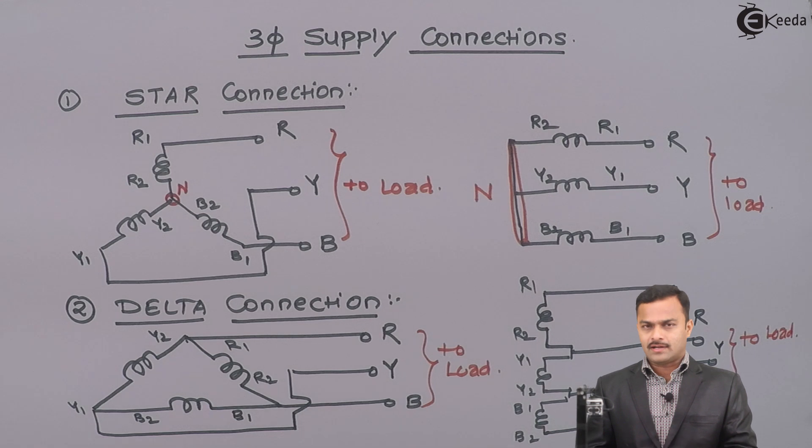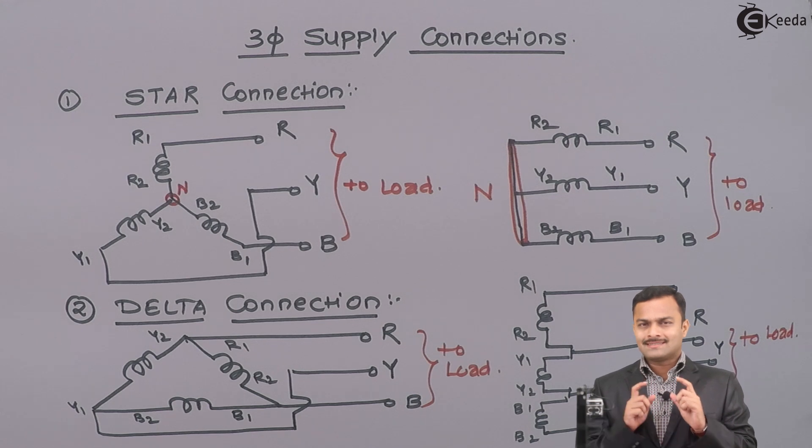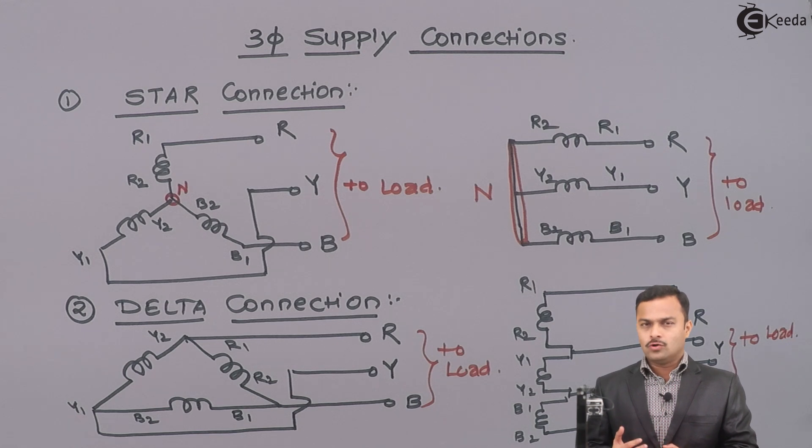Remaining part is slightly different which we cannot compare with the DC circuit. Because there we have seen only resistances are connected in star and delta. But here, supplies and loads are connected in star and delta. Thank you.